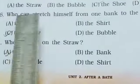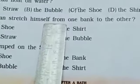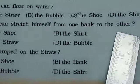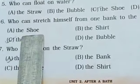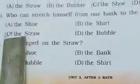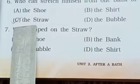6. Who can stretch himself from the bank to the other? A. The shoe, B. The shirt, C. The straw, D. The bubble. Correct answer, C, the straw.